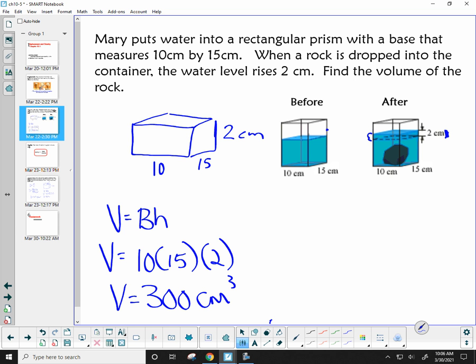The water level went from here, then it went up to here, which is the 2 centimeter height. That's why my prism itself is 10 by 15. The displacement, which is the volume of the rock, went up 2 centimeters. That's why I just wanted to find the volume of just this portion. I'm literally finding the volume of just this little piece right here. Did that answer your question? You sure?